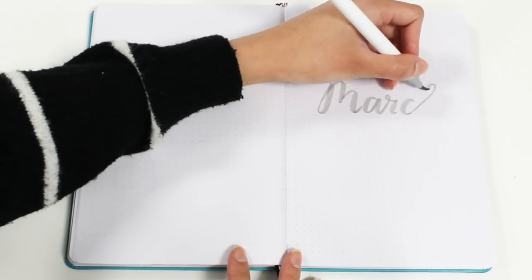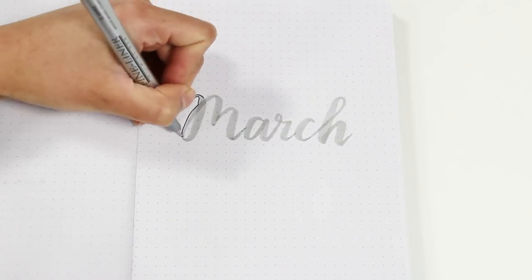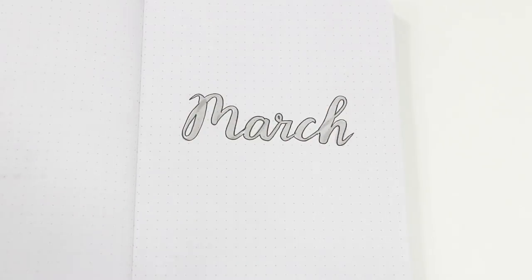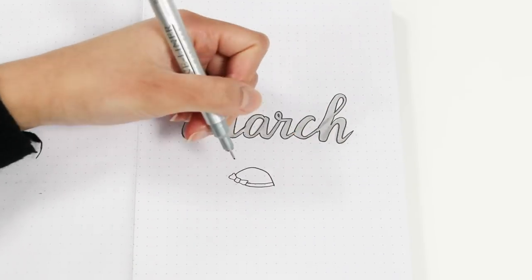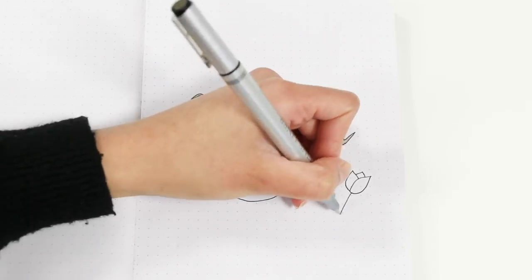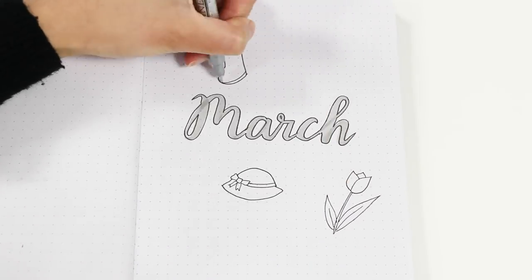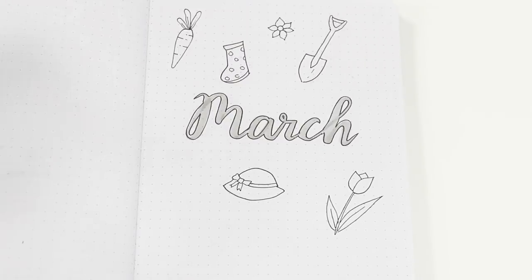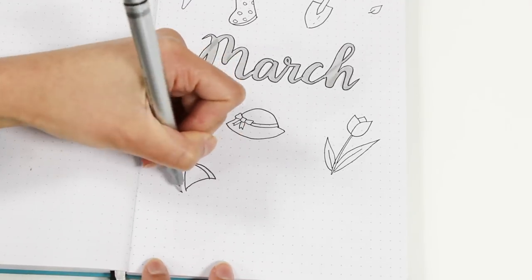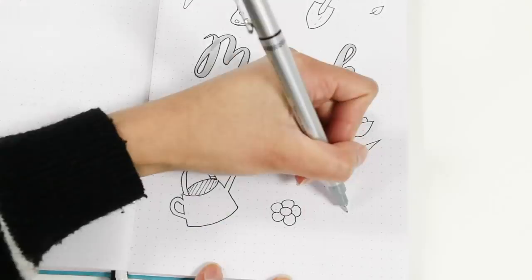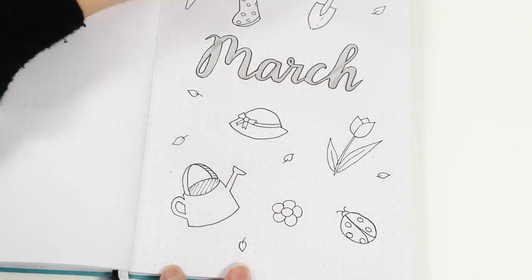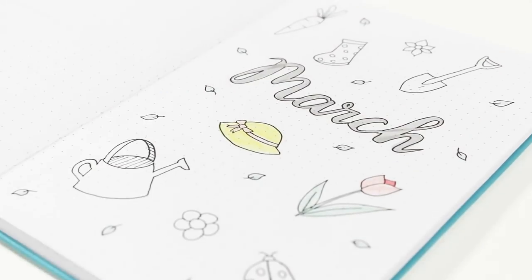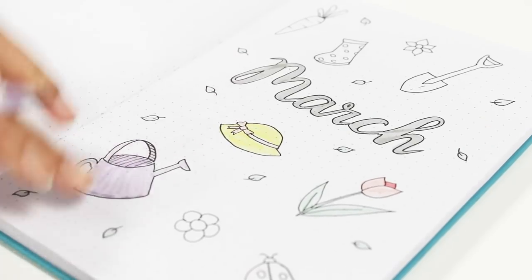For the setup, as usual I'm starting with a cover page. I'm just writing March with a grey brush pen and outlining it with a black fineliner to add a bit more depth. Then I'm just adding super simple spring doodles everywhere—anything that reminds me of spring like flowers, gardening tools, and leaves. I'm coloring everything in using my Stationery Island season brush pens in spring because the colors are very nice and fitting for this theme.